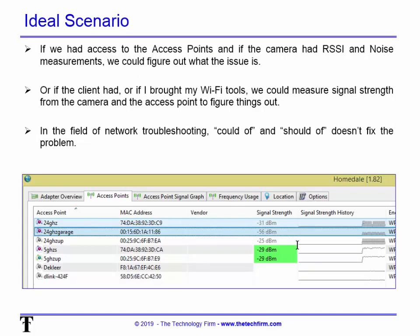The ideal scenario: if we had access to the access points and if the camera had RSSI and noise measurements, we could figure out the issue. Consumer-grade cameras typically don't give you that — they might show a Wi-Fi signal with green bars, but we need numbers: negative 60, negative 90, and we need to know if the noise is negative 50 or negative 20. Here's a screenshot of one of my favorite tools, inSSIDer — a portable app for Windows that can measure signal strength from access points. That's just an example of something you might want to look into.